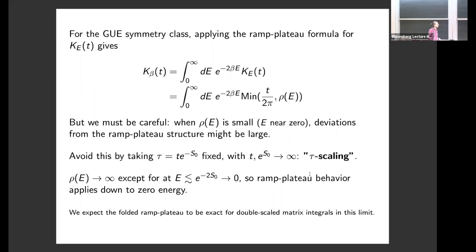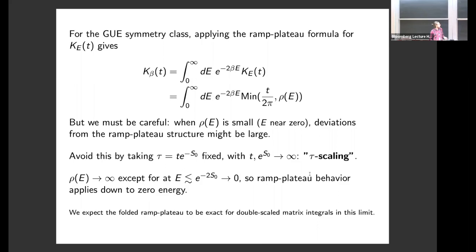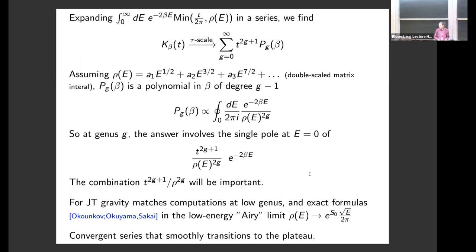Tau is a rescaled time. In this limit the density of states is infinitely large for all finite energies, so the ramp-plateau behavior becomes a good approximation all the way down to zero energy. As a more general comment, we expect this folded ramp-plateau formula for k_beta to be exact for all double-scaled matrix integrals in this limit.